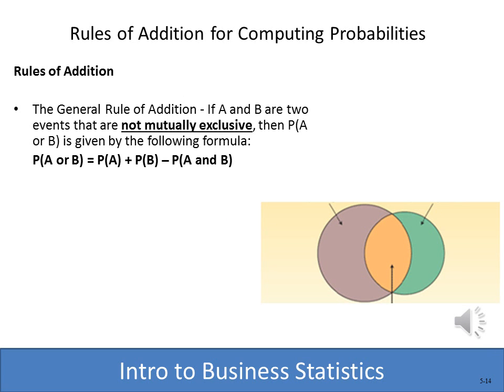Remember, mutually exclusive means that if we get one we can't get the other. But there are also times when outcomes are not mutually exclusive. In that situation, the probability of getting either one or the other equals P(A) — say 60% — plus P(B) — say 30% — but we have to subtract the intersection where both A and B could occur. As you see in this Venn diagram, we have to subtract the intersection of the two outcomes.